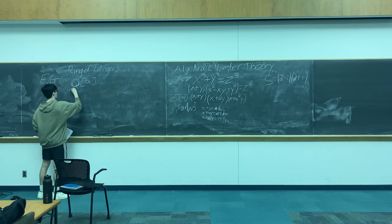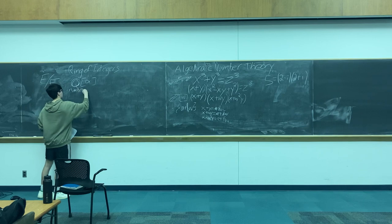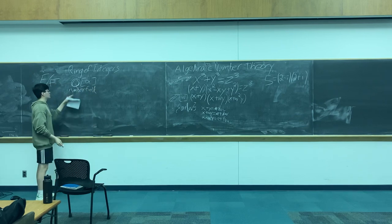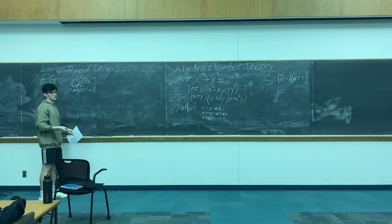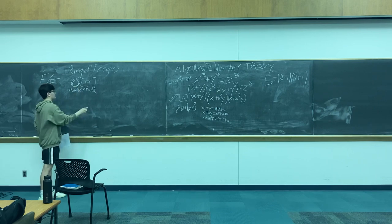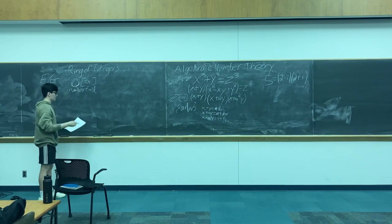A field extension is when you have a subfield relationship. It's a finite field extension if the larger field has a finite basis over the smaller field. We say it's a number field if it's a finite extension of the rationals. For our purposes, this is typically going to be Q adjoined α — that's a number field.